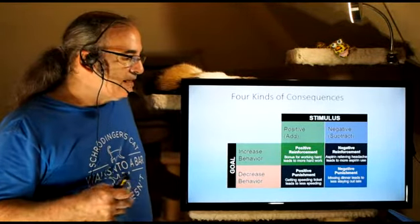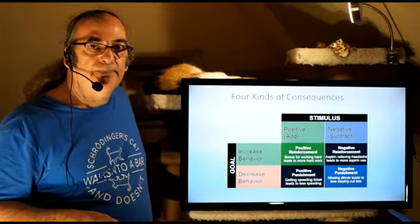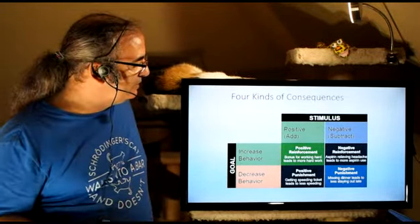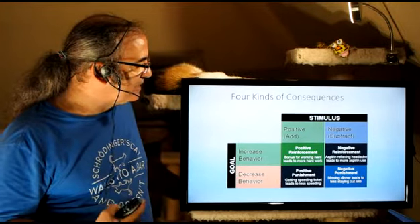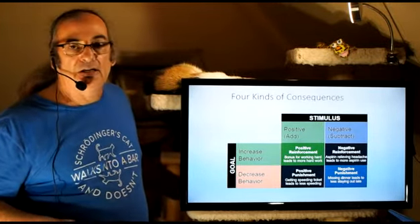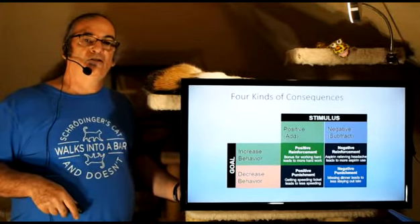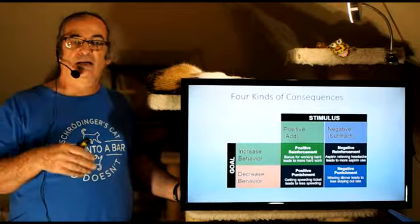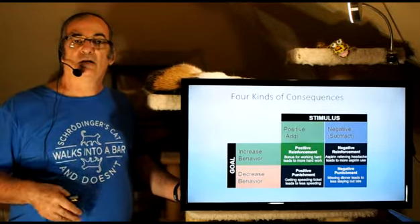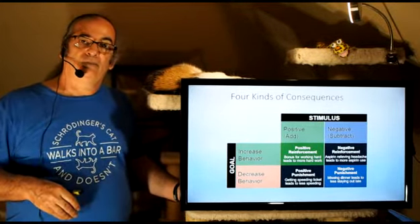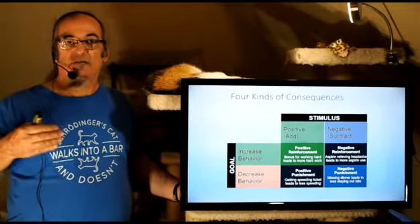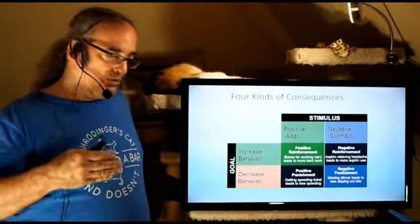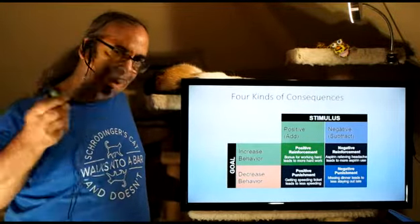So negative punishment is taking away something desirable, taking away good. In this case, missing dinner leads to less staying out late. So your teenager comes home and they say, wow, what's for dinner? And you say, dinner was excellent. And you tell them what you had for dinner. And we did that at 6 p.m. Notice it's 7 p.m. now. I'm sorry. No dinner for you. That is taking away good, in essence to make them come home earlier so that they arrive for dinner.